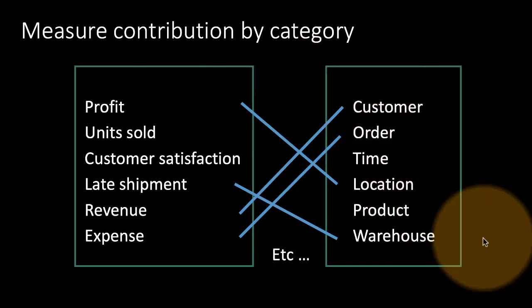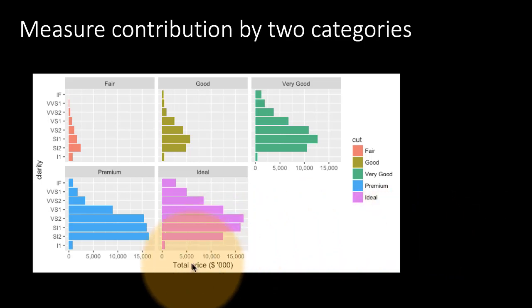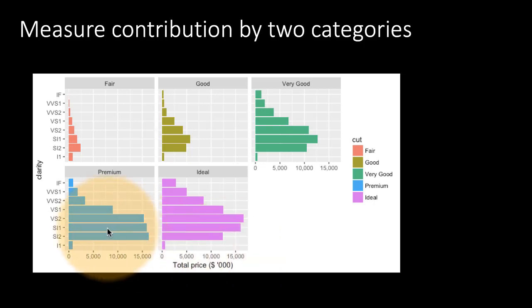Another thing we could do is look at measure contribution not by one category but by two categories. Going back to the diamonds dataset, we're trying to plot price on the y-axis and clarity on the x-axis.